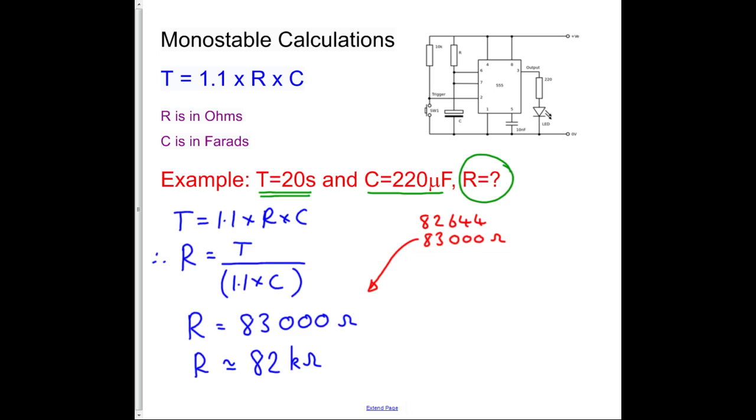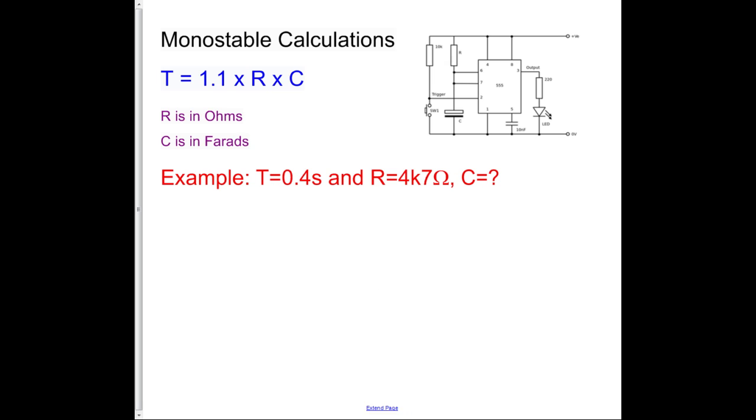Let's see if there's one more problem, which there is. So what we've got this time, we have to find C, the capacitor value. We've chosen to use R is 4k7, and we've got our time is 0.4 seconds. Just a note before we carry on, what does R equals 4k7 mean?